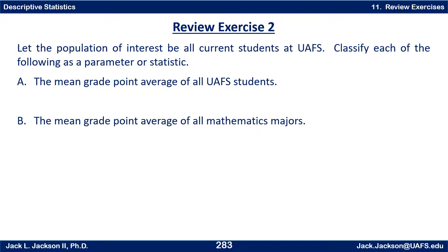Review exercise two. Let the population of interest be all current students at UAFS. Classify each of the following as a parameter or statistic: A — the mean grade point average of all UAFS students; B — the mean grade point average of all mathematics majors. Press pause.